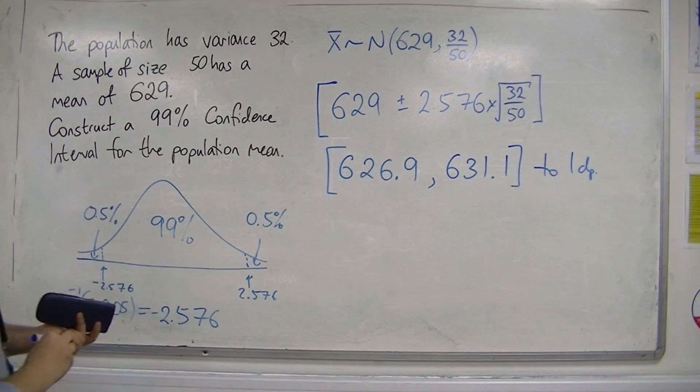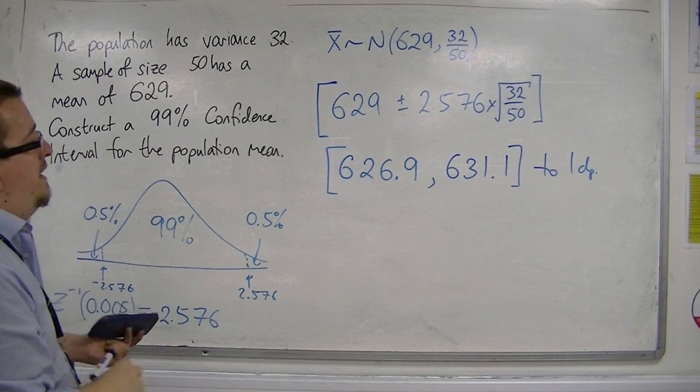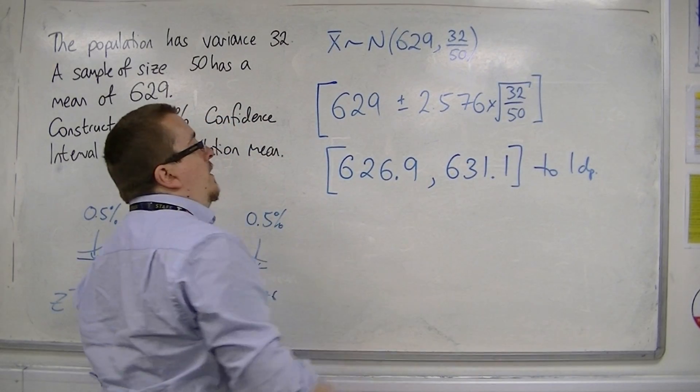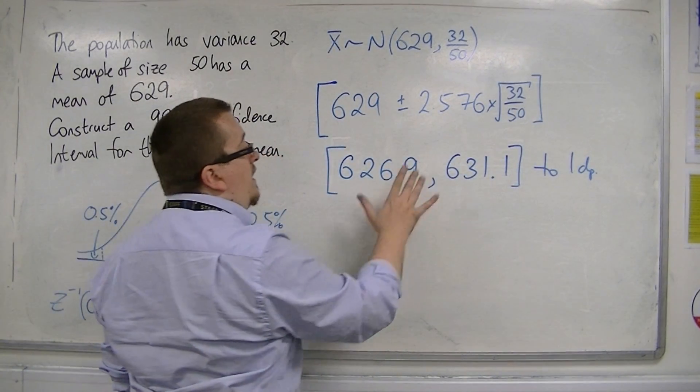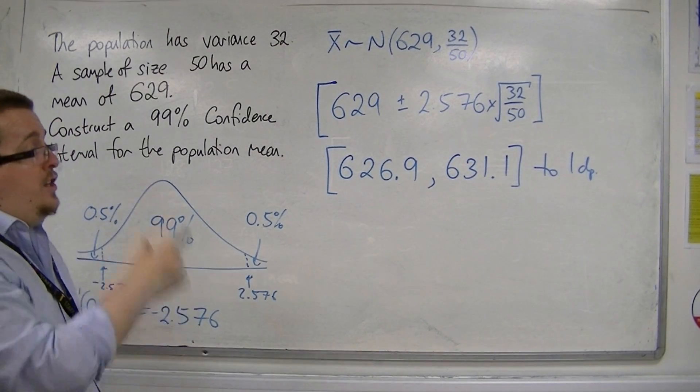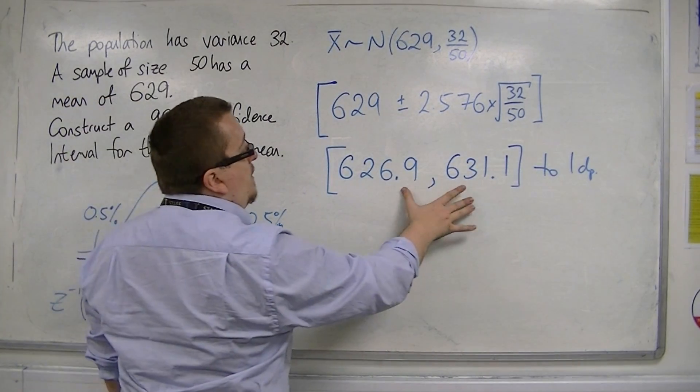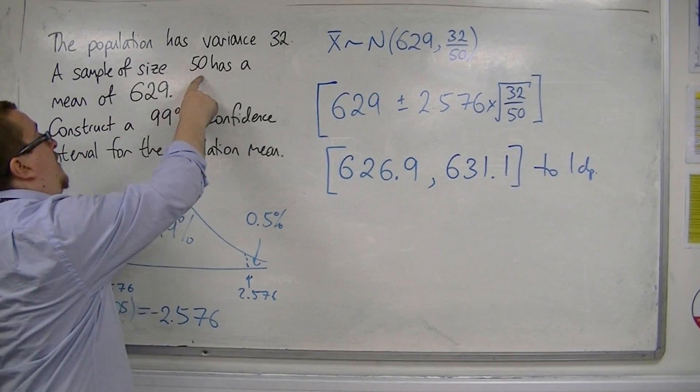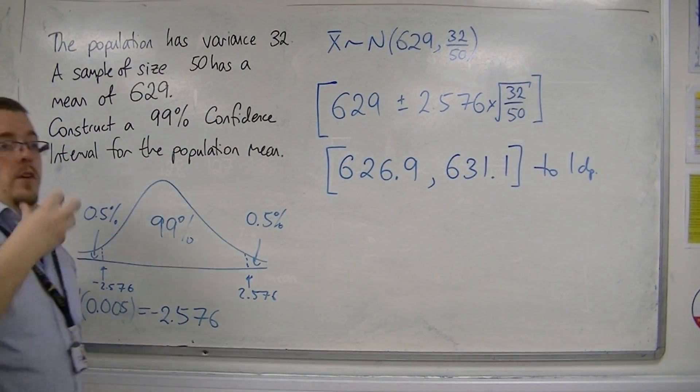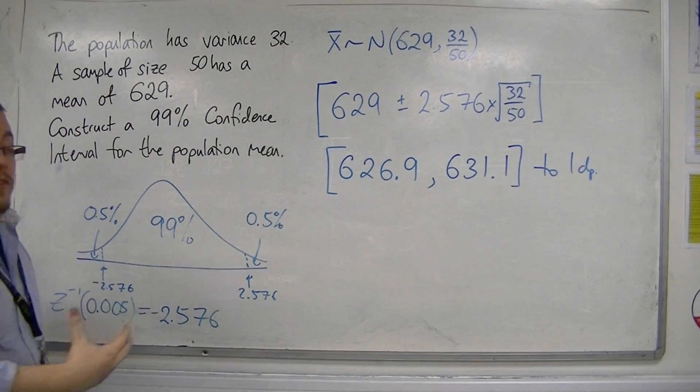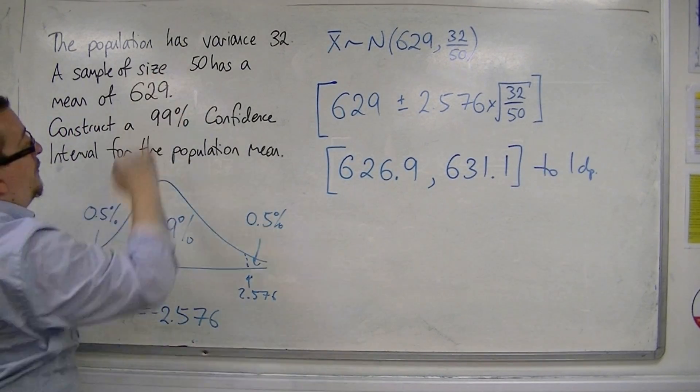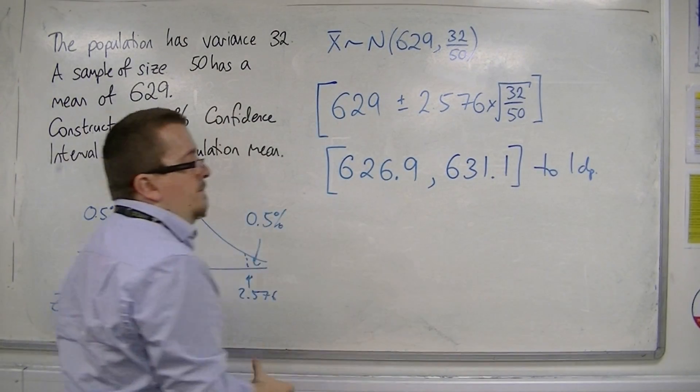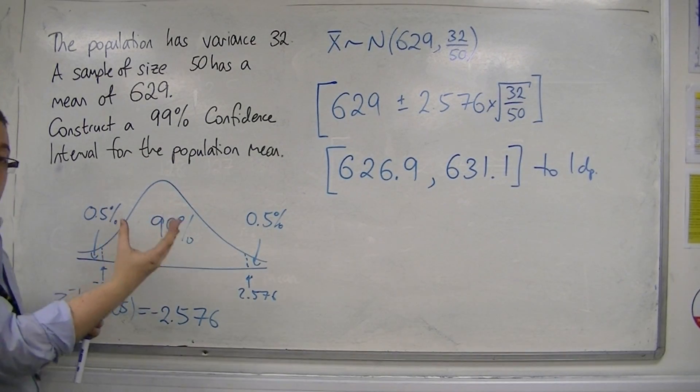So I can be 99% confident that the population mean will be between these two values. And you can see that actually, both of them are quite close to 629, and that's because the sample size was so large. That kind of adds a trustworthiness to our answer, because the sample size is large, that means the confidence interval will be narrower.